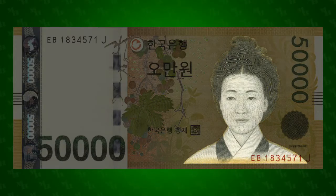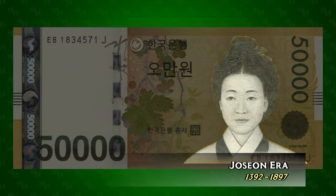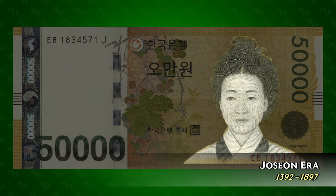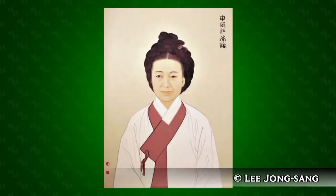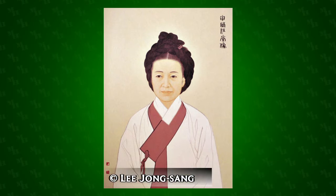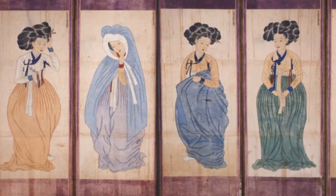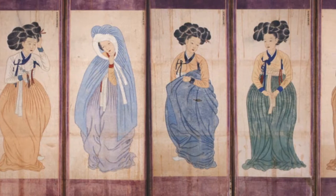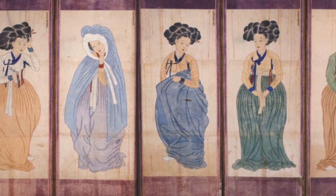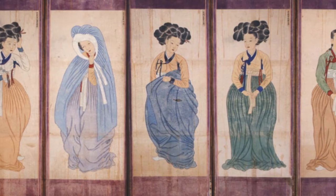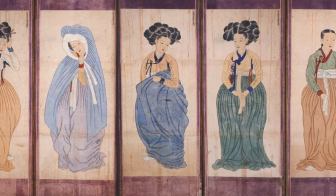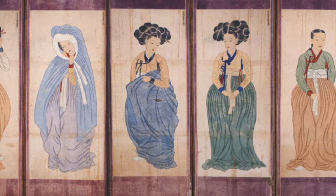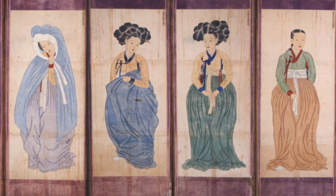an artist and writer from the Joseon era of Korean history between 1392 and 1897. It's based on a portrait of her by Korean artist Lee Jong-seng. Her father had no sons, and as the most talented daughter, she was given the education a male would normally receive, though not the opportunities.